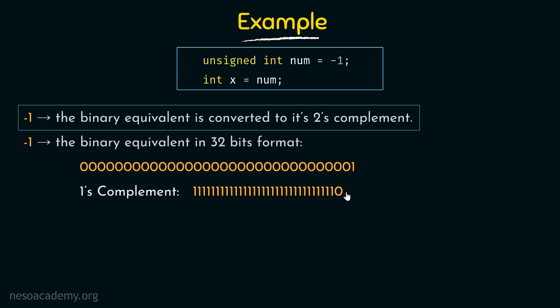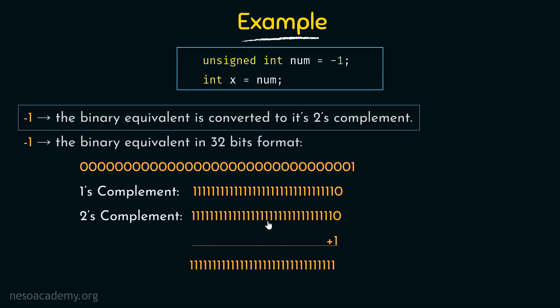Now we have the 1's complement. To convert it to its 2's complement, we simply add 1 to it — that is binary addition of 1. The 2's complement is obtained by adding 1 to the 1's complement. Adding 1 gives us the resulting 32-bit number.